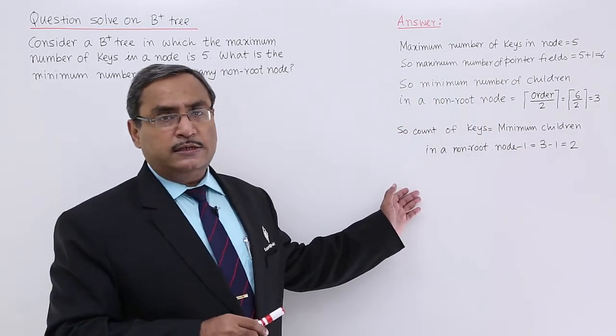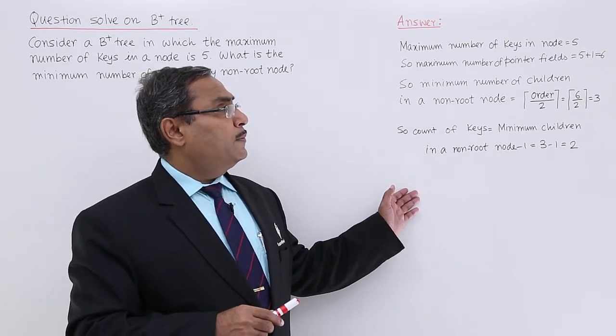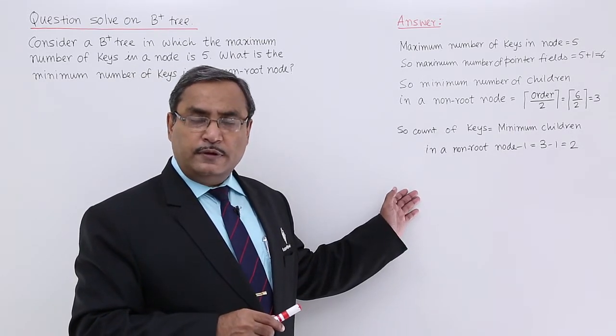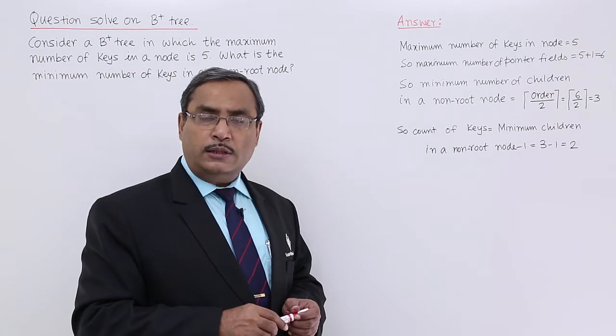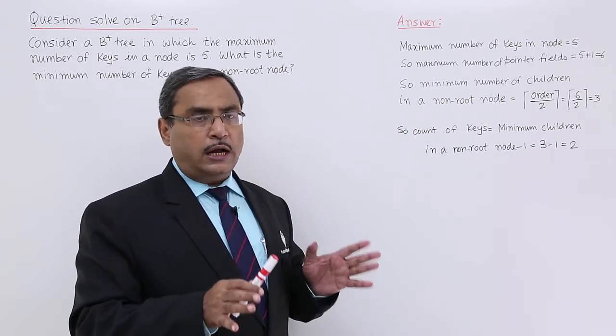Here is the respective answer for us. Minimum number of keys in a node is 5. The maximum number of pointer fields will be 5 plus 1, that is 6, which we discussed earlier.